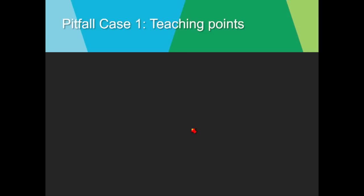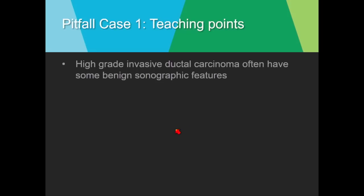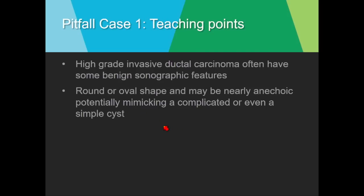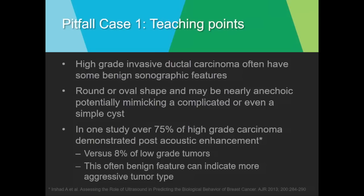Some teaching points: high-grade invasive ductal carcinoma often has some benign features. It can be round or oval in shape, and occasionally so nearly anechoic that it may appear to be a complicated cyst — or even a simple cyst. One study showed that over 75% of high-grade carcinomas demonstrated posterior acoustic enhancement, versus only 8% of low-grade tumors. So this often benign finding of posterior acoustic enhancement can actually indicate a more aggressive tumor type.